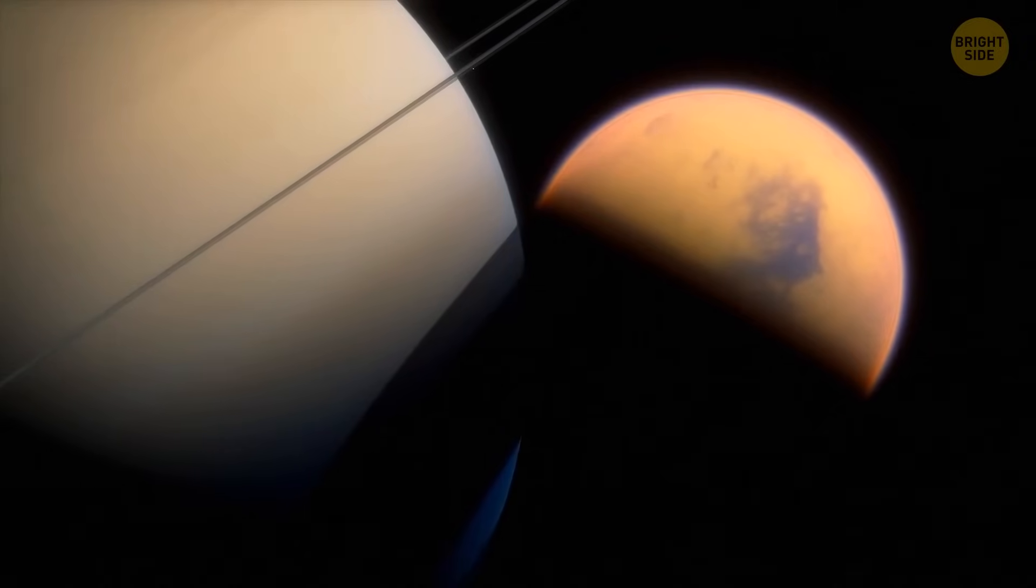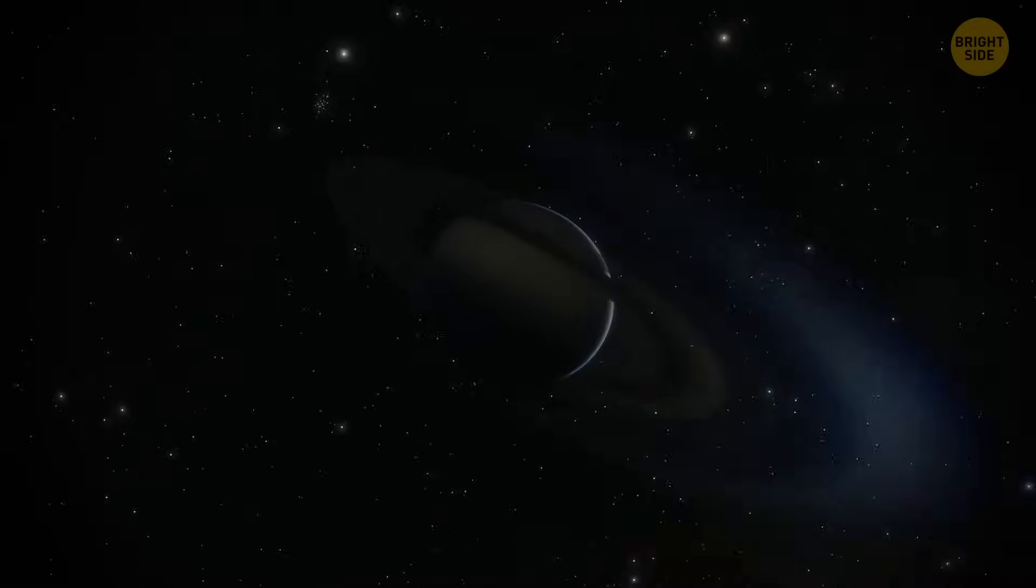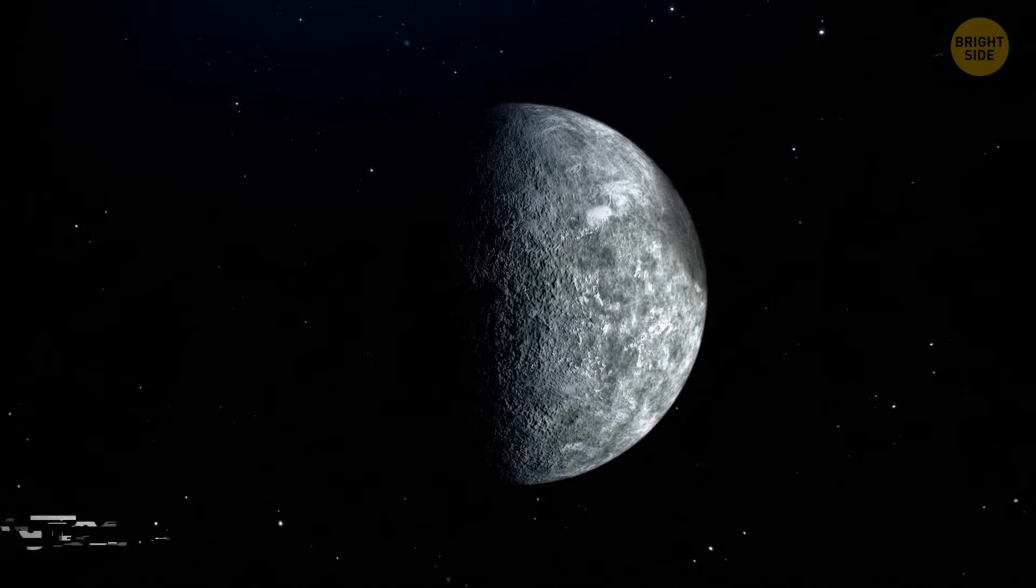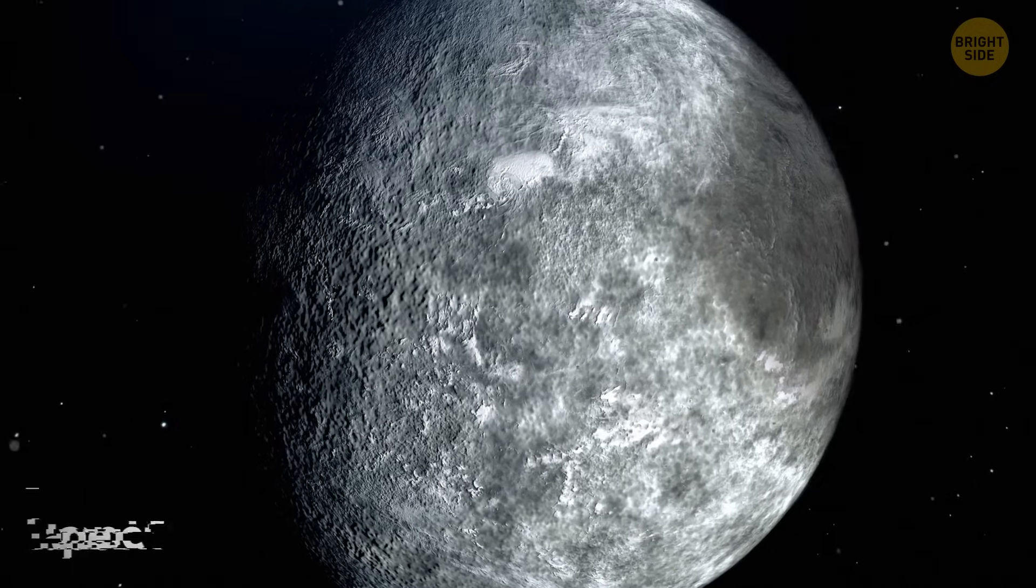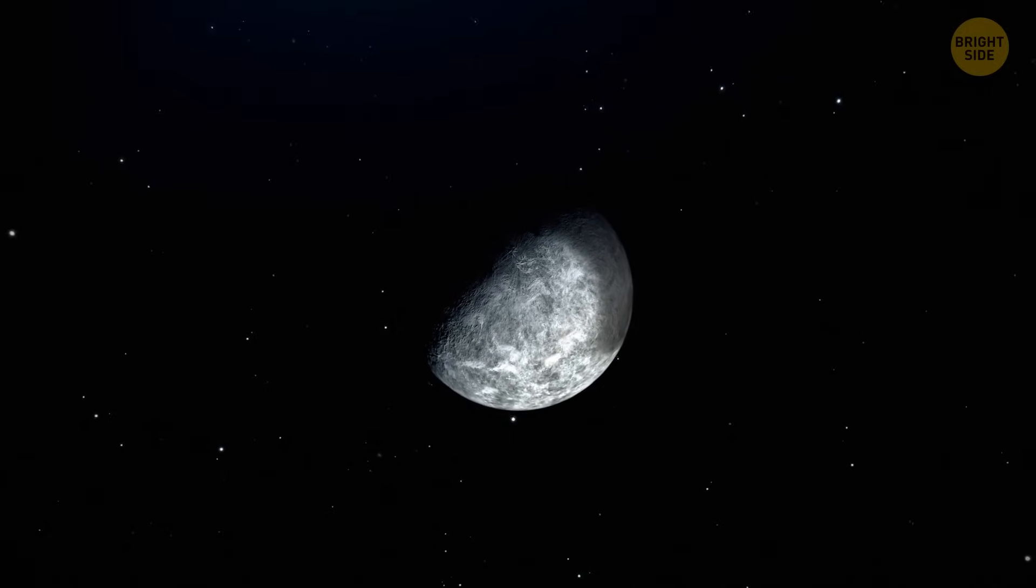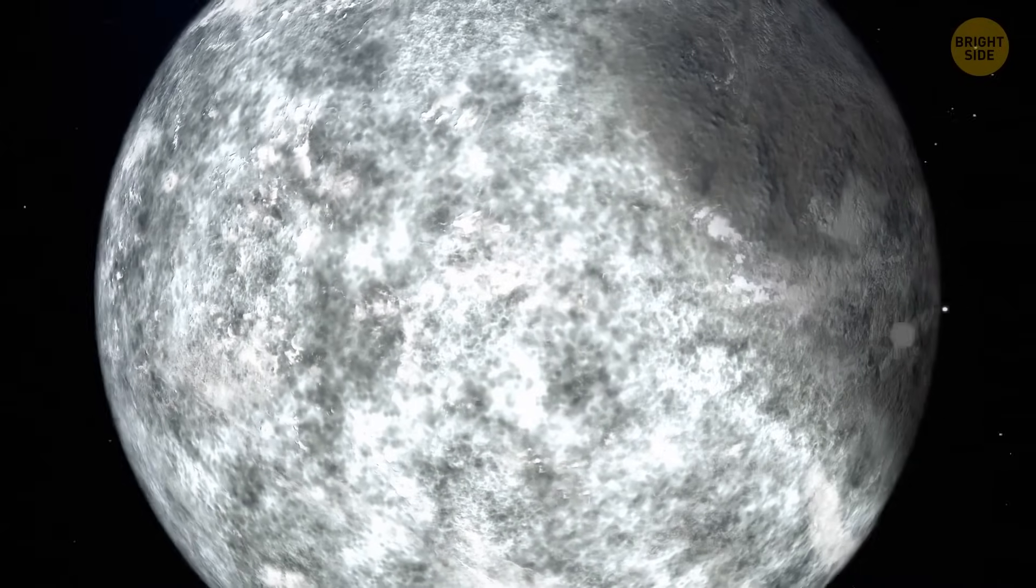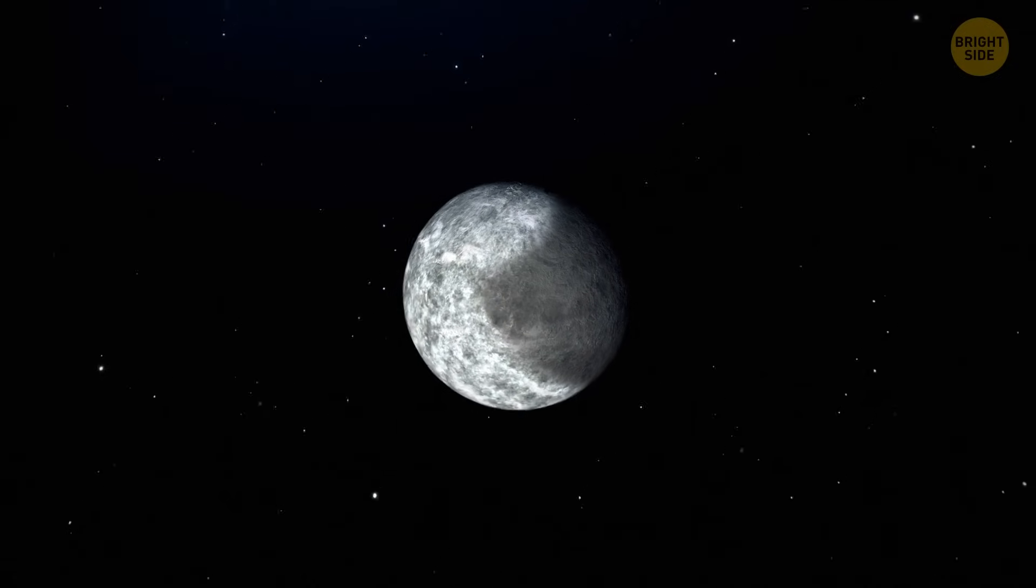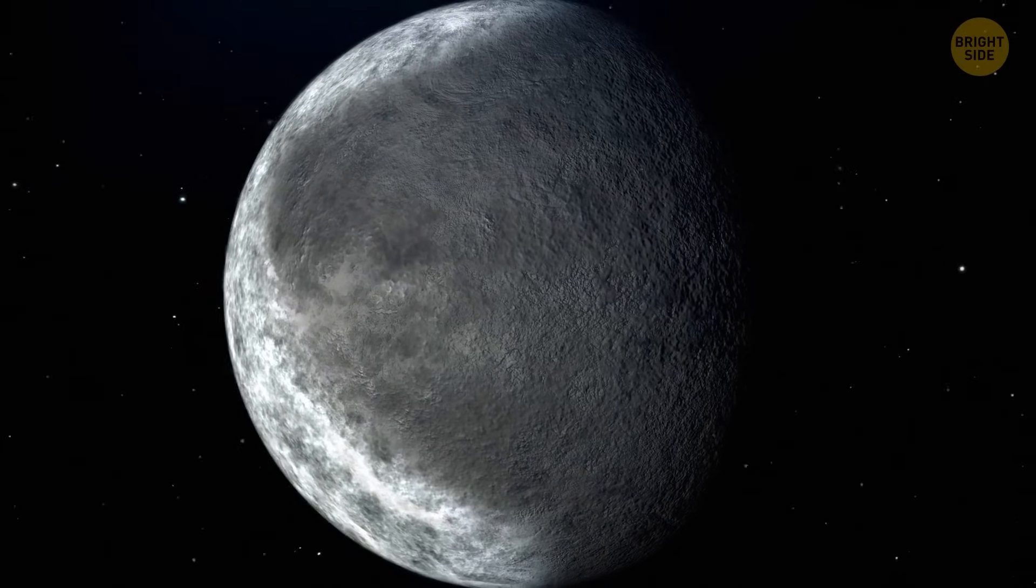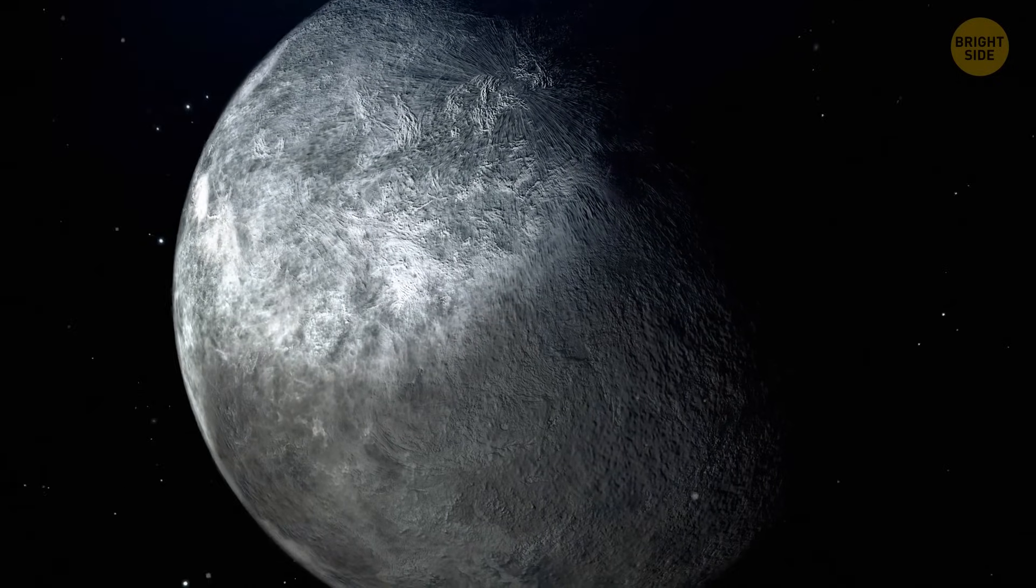Saturn has 82 moons we know about. 53 confirmed and 29 more that are still on the waiting list. And one of the coolest moons might be a 914-mile-wide hunk of rock called Iapetus. It's dark on one side and bright on the other. Its lighter half is 20 times more reflective than the other one. As it turned out, the bright side is ice. The dark side is a bit more complicated. One theory says it's dark because of particles coming from another moon, the one named Phoebe. Another theory says it could be because of heat. Since the moon is rotating really slowly, its dark material is absorbing heat, which makes it even darker.